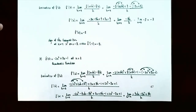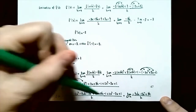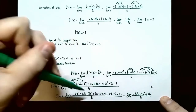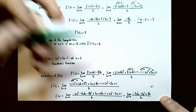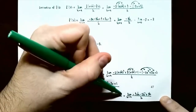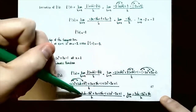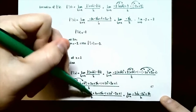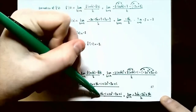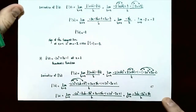Now the terms without h will all cancel out. Negative 2x squared plus 2x squared is 0. 3x minus 3x is 0. Negative 1 plus 1 is 0. The only terms left are those containing h: negative 4xh minus 2h squared plus 3h, all over h.